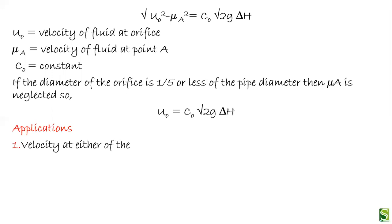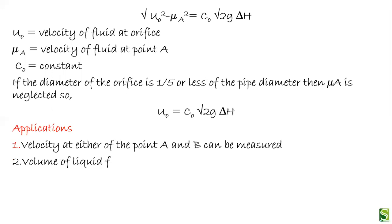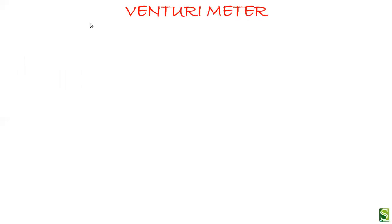The application of the orifice meter: the velocity at either point A or B can be measured, and the volume of liquid flowing per hour can be determined using this method.